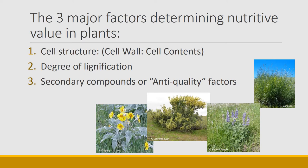When thinking about what major attributes of a plant influence nutritive value, I break it down to three factors. The first is cell structure — particularly the ratio of cell wall to cell contents. More cell contents means more nutrients; more cell wall means more structural carbohydrates. The second is lignification: the more lignified a plant is, the less digestible and less valuable it is. The third is secondary compounds, or anti-quality factors — things like toxins and tannins that take away from quality. The first two contribute to quality; secondary compounds create anti-quality.